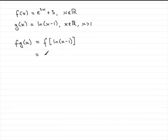So what we have here then is, let's just move this down a bit more, we have got e to the 2 times x. So x is now replaced with the natural log of x minus 1. And then we've got the plus 3, so plus 3.